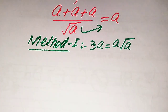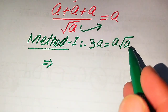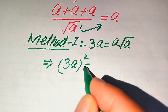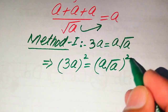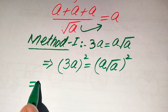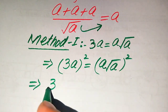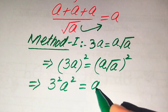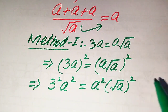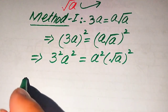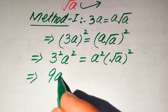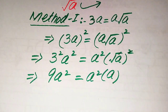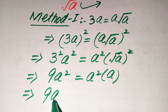In the next step we remove the square root sign from the right-hand side by squaring both sides. After squaring both sides, we apply the square separately on both values: the left side gives 3² times a², which is 9a². On the right side we get a² times (square root of a)², and since the square and square root cancel, we get a² times a.